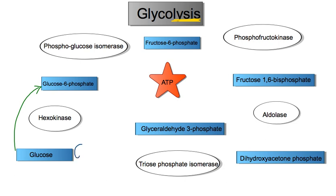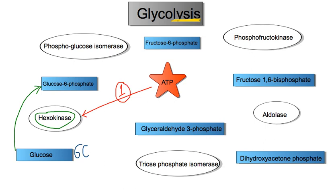The first step is converting glucose into something called glucose-6-phosphate. Glucose is a six-carbon sugar. To convert glucose into glucose-6-phosphate, we have the enzyme known as hexokinase. However, during the process, hexokinase uses one ATP — so that's our first investment in glycolysis. It uses one ATP to convert glucose to glucose-6-phosphate.